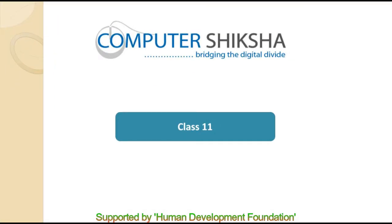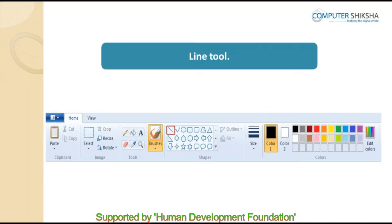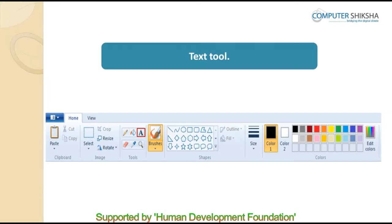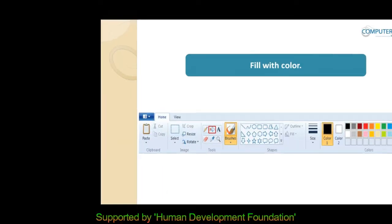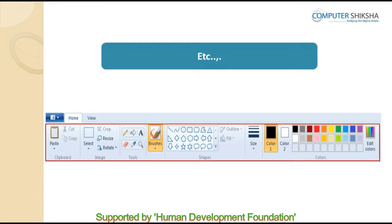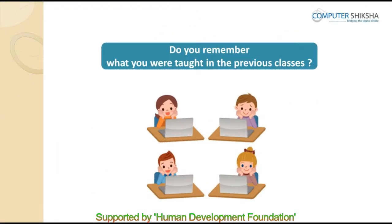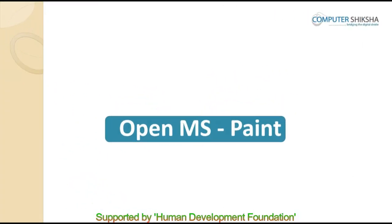Good day to all of you. In the past few classes, you have learned a lot of topics like Line Tool, Thickness of a Line, Text Tool, Rectangle Tool, Color Box 1, Color Box 2, Fill with Color, Color Palette, etc. Do you remember what you were taught in the previous classes? Now, power on your computers and open the MS Paint file.